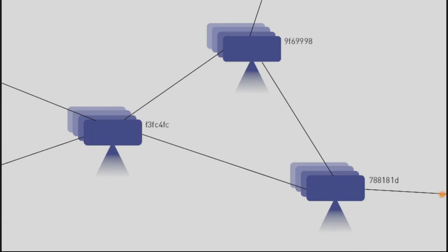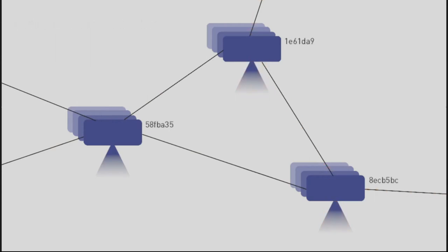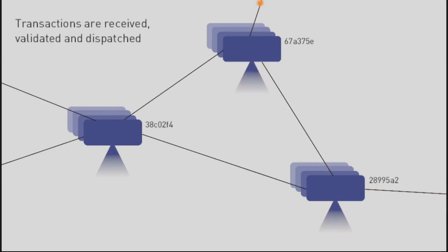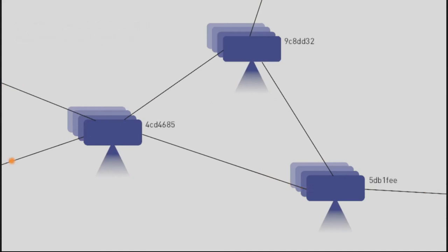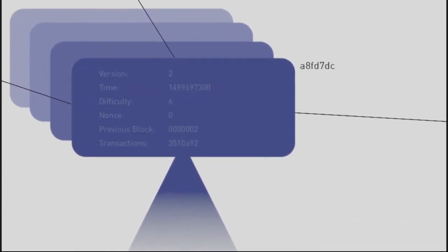We have three nodes in this system and the orange points are transactions getting into the system. The triangles beyond the nodes symbolize the Merkle tree, and the transactions are validated and dispatched. If we look at the block header, there are six input values.